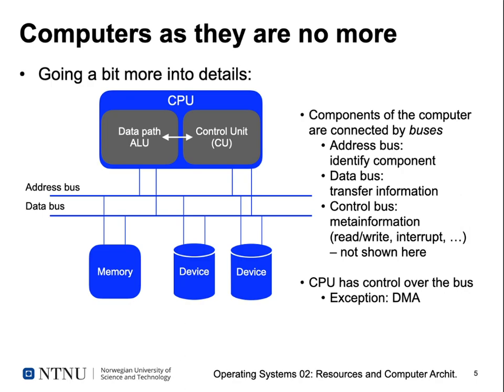Our CPU consists of two major parts: the data path, which has the registers of your CPU and the ALU doing the calculations, and the control unit that determines what the data path is doing at any given moment. This CPU is connected to our memory and to one or more IO devices using buses. The major buses are the address bus, and our CPU can generate addresses from the control or data unit and then transfer data.